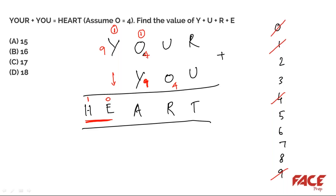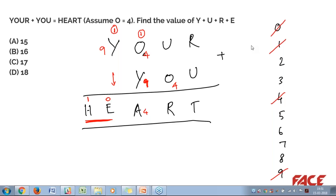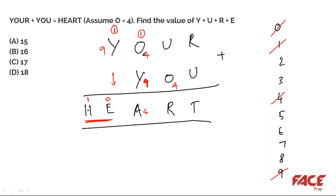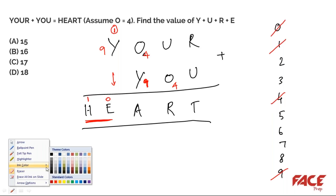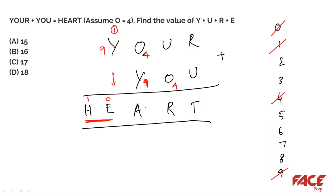If A = 4, that's not possible because O is already 4 — every digit must be unique. So there cannot be a carryover into this column. Therefore A = 3, and 3 is now used. With Y = 9, O = 4, H = 1, E = 0, A = 3 all determined, we move on.